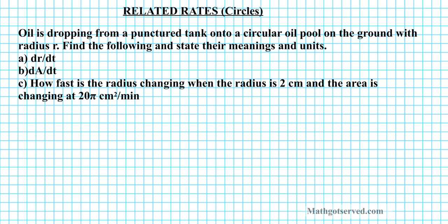Oil is dropping from a punctured tank onto a circular oil pool on the ground with radius r. Find the following and state their meanings and units. So let's go ahead and start by sketching a diagram of the situation. We have a punctured tank and oil is dropping onto a circular pool.